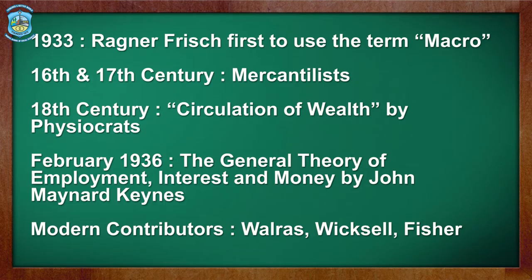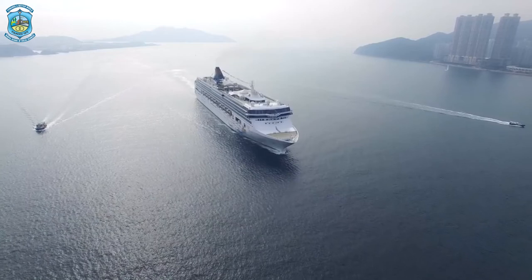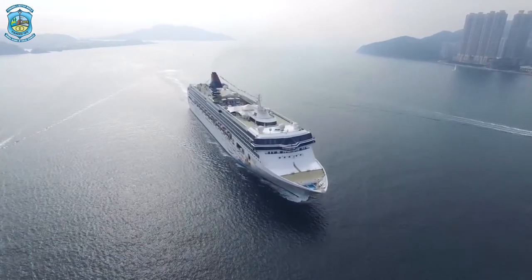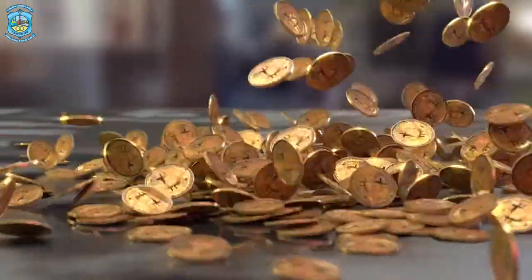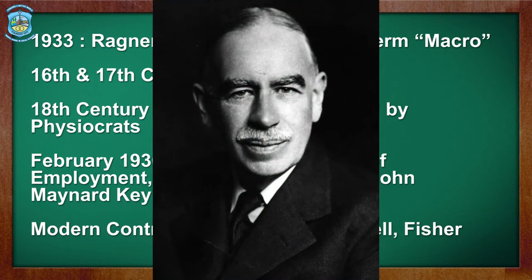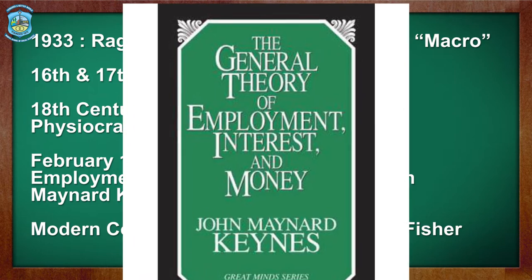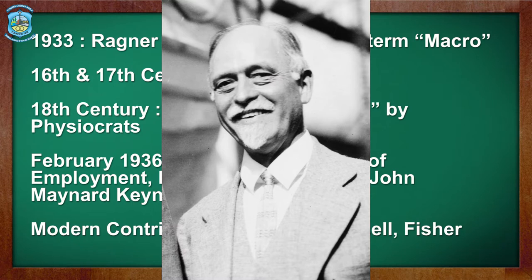Macroeconomics is a term derived from the Greek word 'macros,' which means large, or as a whole. This term was first coined in 1933 by Reginald Frisch. In the 16th and 17th century, mercantilists made this term more popular and talked about dealing with wealth. The 18th century saw the circulation of wealth as a key aspect of macroeconomic analysis. The modern contributors to the macroeconomic approach are Walras, Pigou, Fisher, and various others.